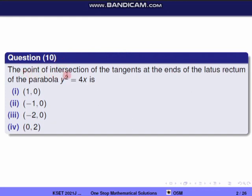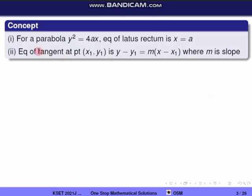The point of intersection of the tangents at the end of the latus rectum of the parabola y² equal to 4x. Let's look at the parabola and the two tangents at the end of the latus rectum.